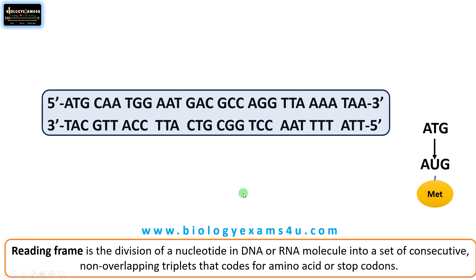Suppose this is a sample sequence. How many reading frames are there for this double-stranded DNA? Let us find out. Both strands are read in the 5' to 3' direction, so each strand has three reading frames depending on which nucleotide we choose as a starting position.